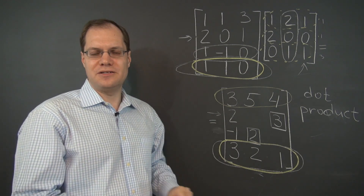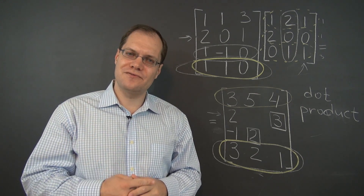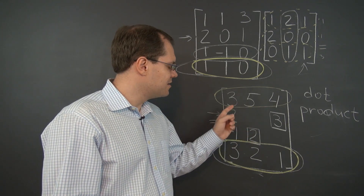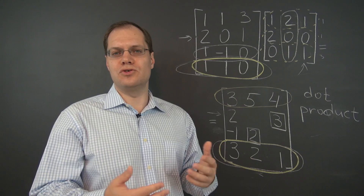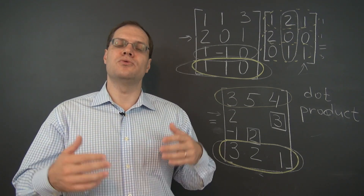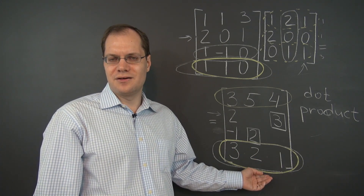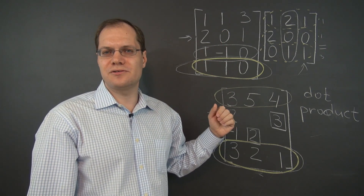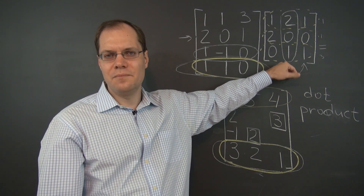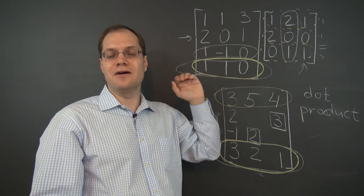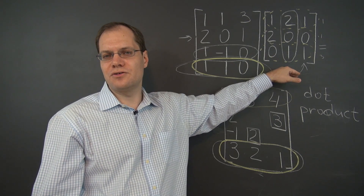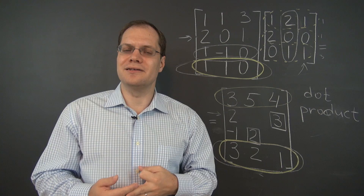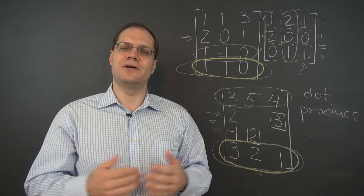To summarize, you have three perspectives: the columns perspective, which is the original perspective; the dot product perspective, which is what you would use when you need to get just a few entries or if you're interested in the result one entry at a time; and then there is the rows perspective, which is also useful in many circumstances. Which perspective to use depends on your purpose for multiplying two matrices, and also on the matrices themselves. If the matrix on the left has a lot of zeros, then perhaps it's easier to use the rows perspective, because you would be calculating very sparse linear combinations — meaning most of the rows would drop out. It's always nice to have several perspectives, and when it comes to matrix multiplication, we have three.